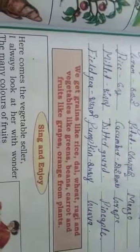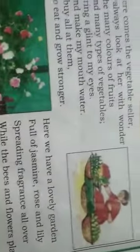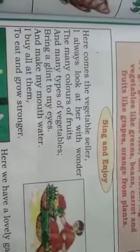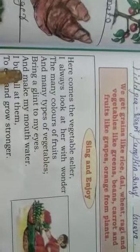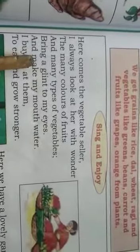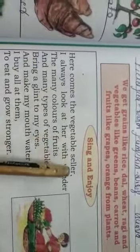This is a sing and song. Here comes Jaya. There is a song about one fruit and one vegetable. What you have to do is read it, sing the song, and enjoy it.